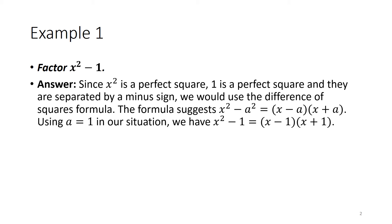Since x squared is a perfect square, 1 is a perfect square, and they are separated by a minus sign, we would use the difference of squares formula. The formula suggests x squared minus a squared can be rewritten as quantity x minus a times quantity x plus a. Using a equal 1 in our situation, we have x squared minus 1 is equal to x minus 1 times x plus 1.